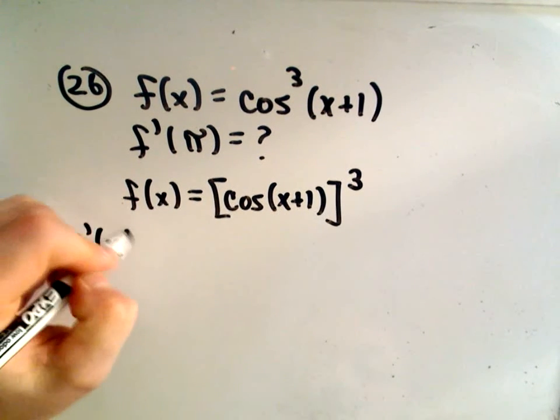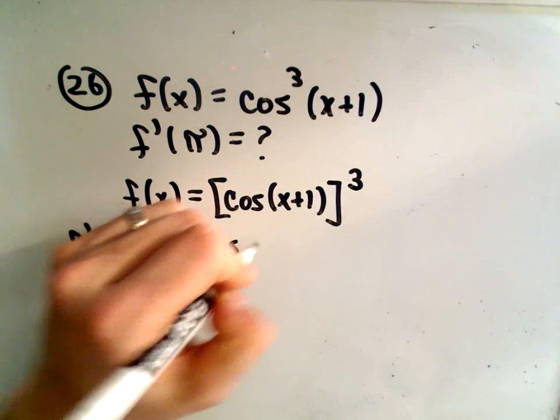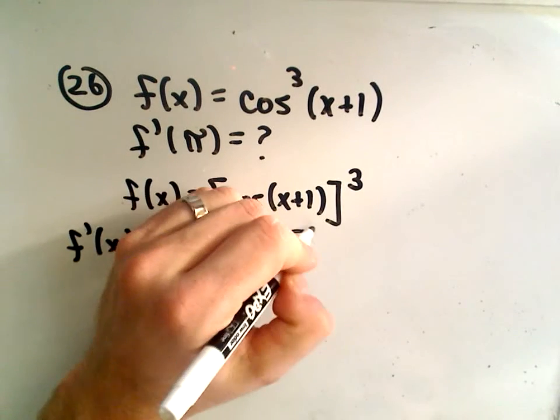So when I take the derivative, the 3 comes out front. We leave the inside alone. Take 1 away from our exponent.